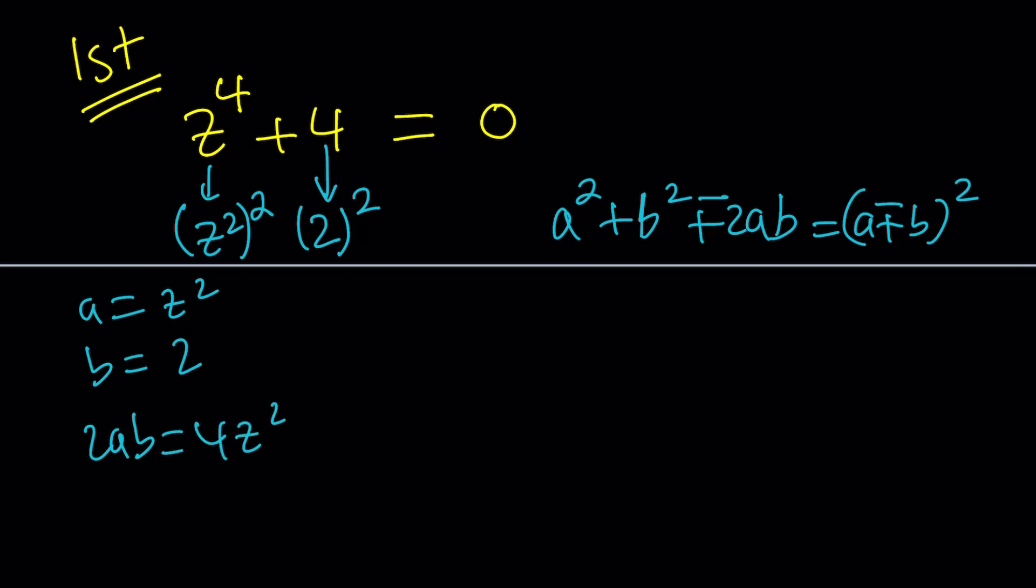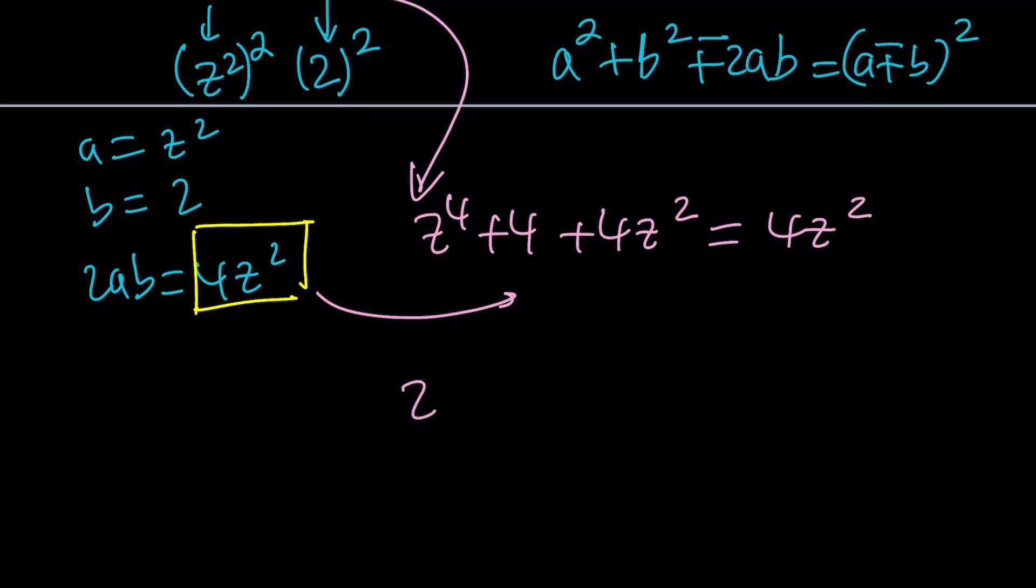So that's what we need to add to both sides. We have a 0 on the right-hand side. So this is what it's going to look like after the addition. Z to the fourth plus 4 plus 4z squared. That's what we're adding. Equals 4z squared, right? Okay, great. So what does that give us though? Well, it gives us a perfect square on the left-hand side and a perfect square on the right-hand side. We will have two squares. So let's go ahead and write the left-hand side as z squared plus 2 quantity squared equals 2z squared.